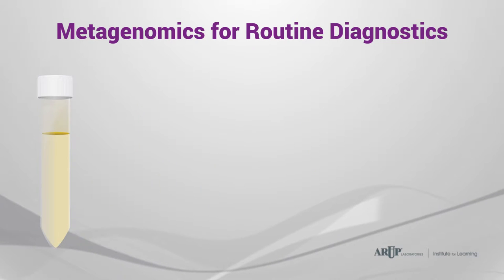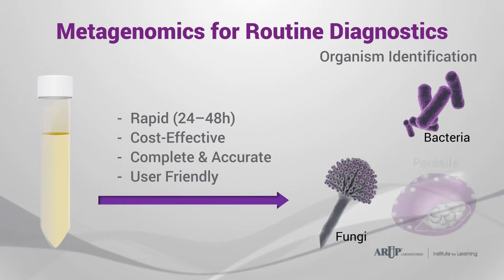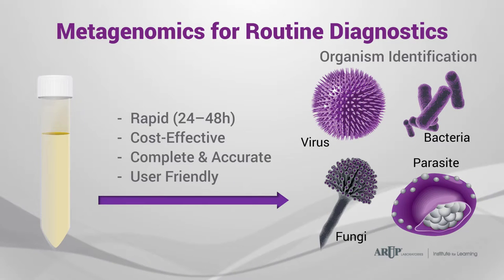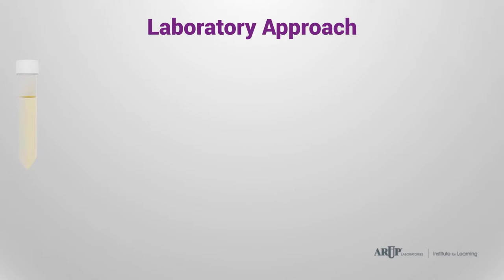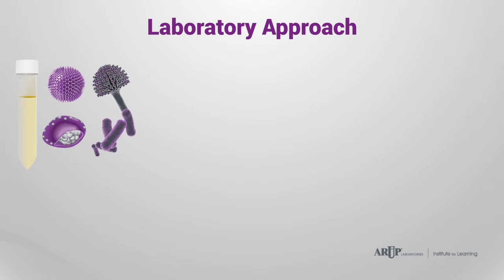In contrast, the goal of universal pathogen detection is to detect any and all pathogens directly from the patient sample. Metagenomics is the closest we can currently get to a universal pathogen detection test. Let's assume we want to analyze a routine bronchoalveolar lavage sample from a patient with pneumonia, which may contain the patient's epithelial cells and leukocytes, bacteria, and viruses.